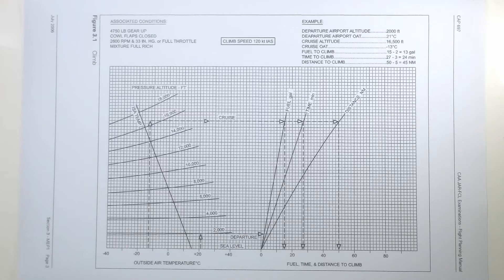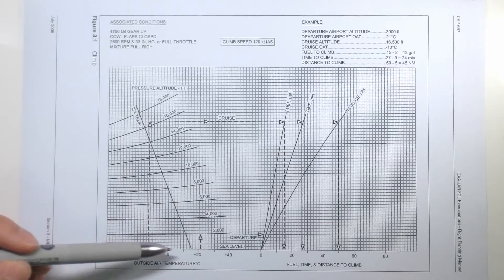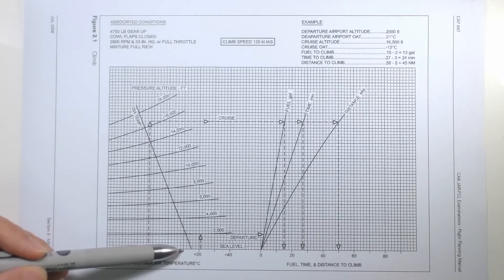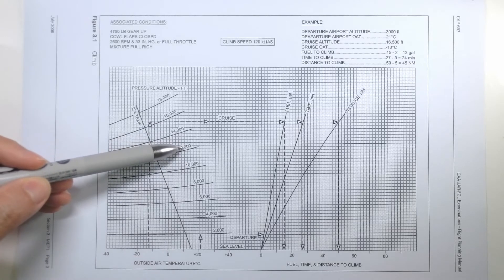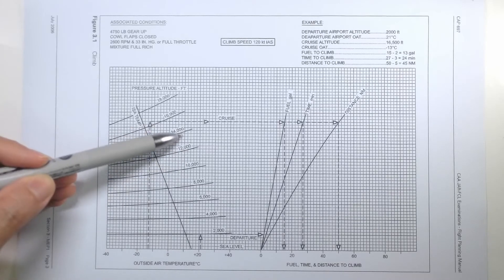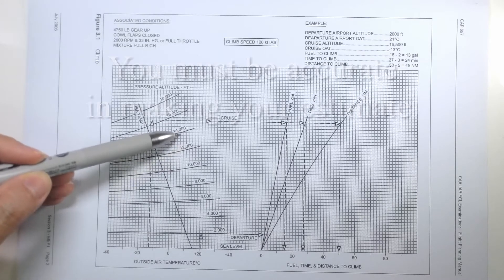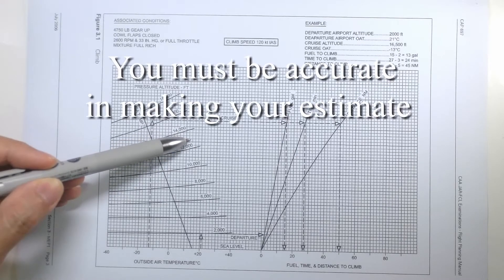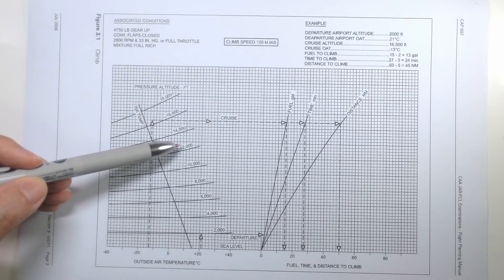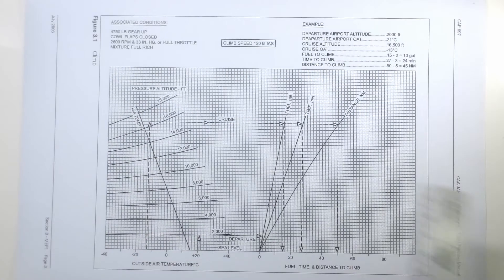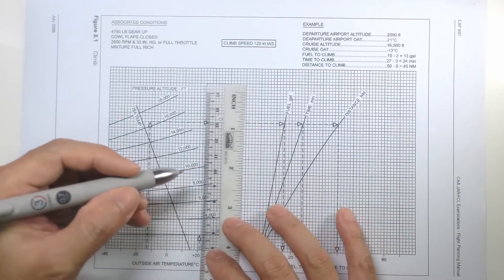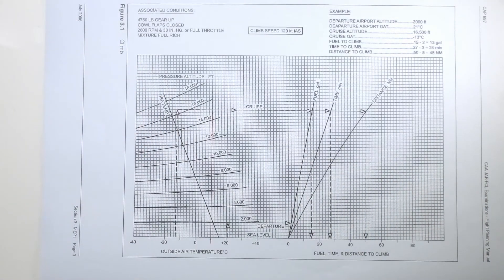That should make logical sense but let's work on the example so you can see how it's done. I shall start from cruise altitude and work my way down to the departure airport so I'll first plot my line from 10 degrees positive at 13,000 feet. 13,000 feet falls somewhere between 12,000 and 14,000 feet so I'd have to interpolate between these two values and see where that line would intersect 10 degrees celsius.